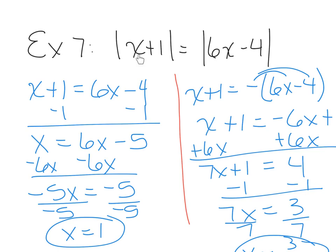To reiterate: when you have two absolute values set equal, take one expression equal to the other, then take one expression equal to the opposite of the second. It doesn't matter which side you put the negative on, but use parentheses when there's more than one term — the negative must hit both terms. Then isolate x. That's it for this section. Work on some homework and bring your questions back to class.